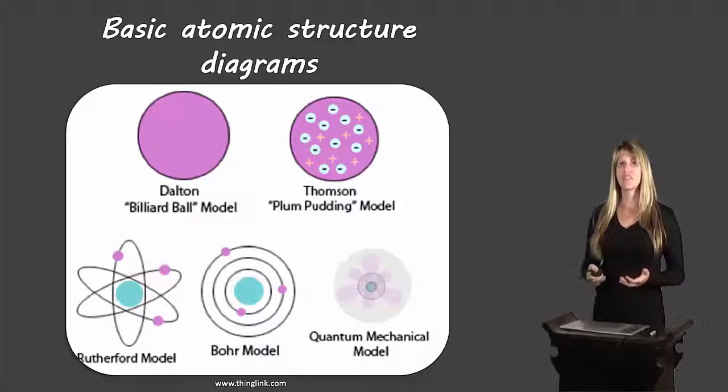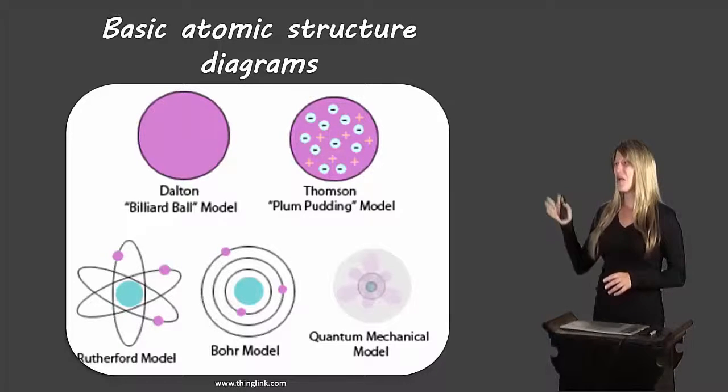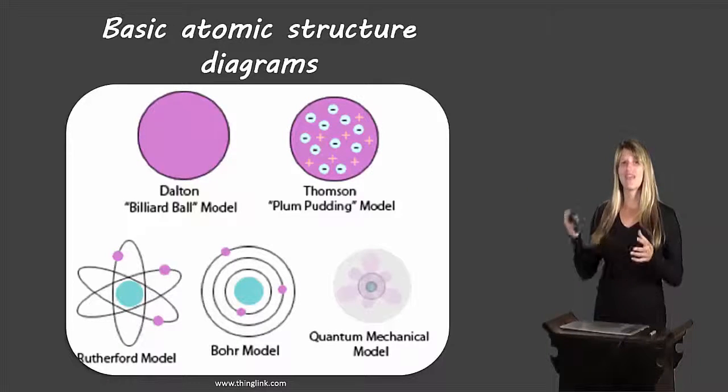The types of diagrams we're going to learn are the Bohr-Rutherford diagram, which isn't represented, and the Lewis dot diagram, which also isn't represented. But these five diagrams are throughout history how we've understood the atom to look.